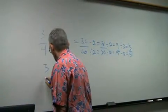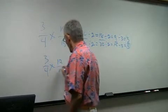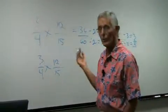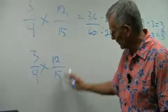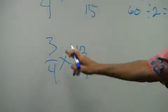We have 3 fourths times 12 fifteenths. Now you may not always be able to cross-cancel, it only works if you can cross-cancel diagonally, you don't cross-cancel vertically or horizontally. So we look at 3.